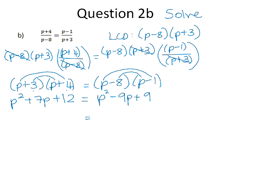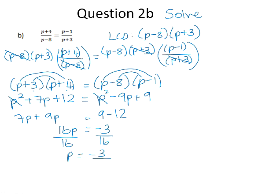If we now get the P squareds on each side, if we move the P squared across, it will add up to 0. I'm going to add 9P to both sides, and I'm going to subtract 12 from both sides. 7P plus 9P is 16P. And 9 minus 12 is negative 3. Divide both sides by 16, and that gives you P to be negative 3 over 16.